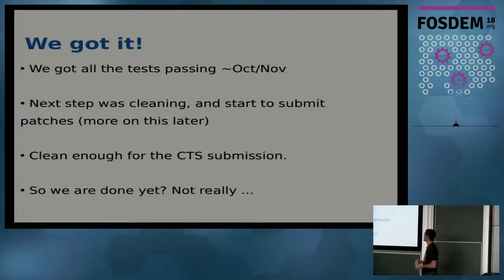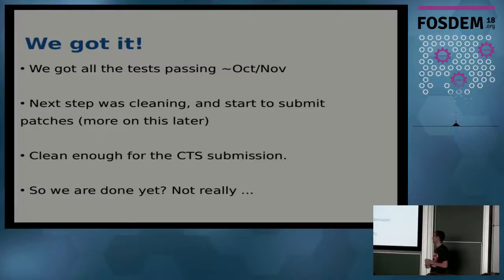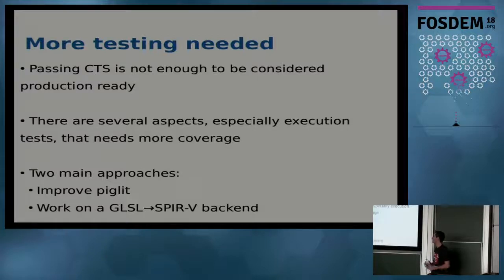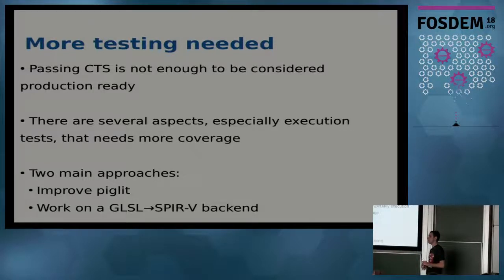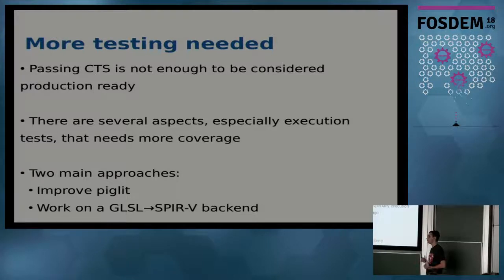As I said in the introduction, we got those tests passing, which allowed us to get conformance — around October or November. That was enough to pass the CTS conformance tests. At that moment, we started to clean the code and submit patches to mesa-dev. But passing conformance didn't mean everything was done — the CTS tests were more focused on following the spec specifics and didn't test too much execution. They may extend that later, or they may assume if the spec parts work then execution is covered by other tests.